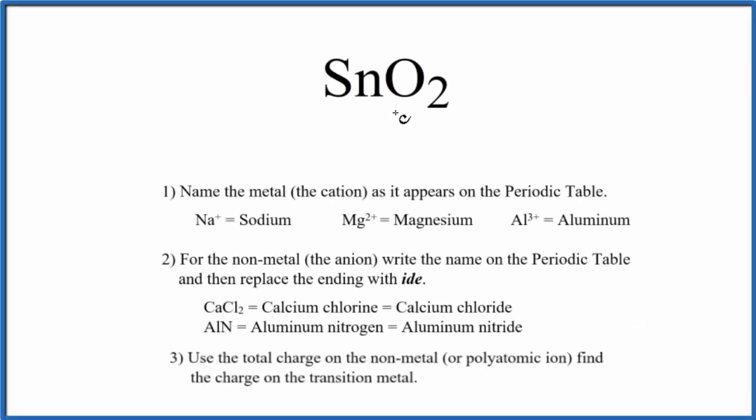To write the name for SnO2, we first need to recognize that we have this metal here and then oxygen, that's a nonmetal. So a metal and a nonmetal, that's ionic.